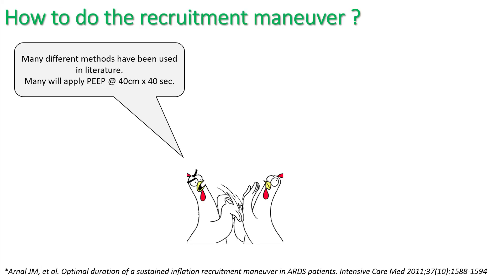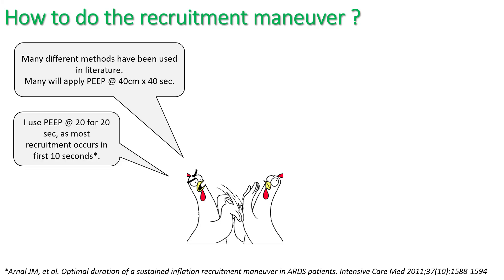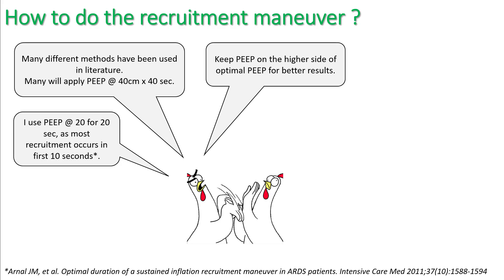Most of the literature uses 40 cm of PEEP for 40 seconds as the recruitment maneuver. However, this can cause severe hemodynamic compromise in certain patients, so it may be prudent to start at 20 cm for 20 seconds, and if the patient tolerates it, go up to 40 by 40 seconds. Once the recruitment maneuver is performed, make sure the PEEP you return to is on the higher side of the optimal PEEP for the best results.